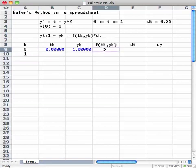The first value of the slope reading is going to be the cell B9 minus C9 squared. The first value of dt, I'm going to set to 0.25.